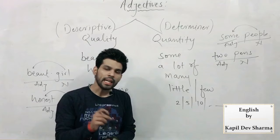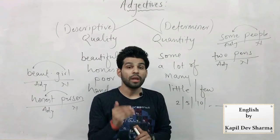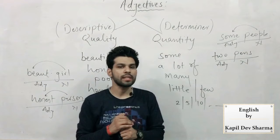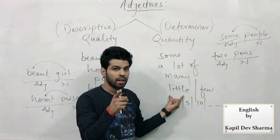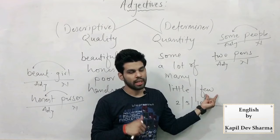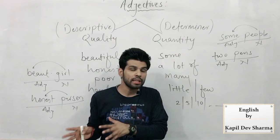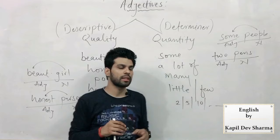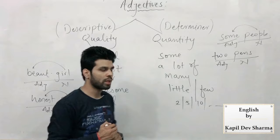एक नई चीज़ यहाँ से add करना चाहूँ — general तौर पर जो मैं आगे बोलने वाला हूँ, वो books नहीं पढ़ाती। हमें रटा दिया जाता है कि little का इस्तेमाल uncountable nouns के साथ करते हैं, few का इस्तेमाल countable nouns के साथ। Fine — few people: बिल्कुल सही। Little water, little money — money uncountable थी। पैसे और dollars गिनते हैं, money याने धन नहीं गिना जाता। तो little का इस्तेमाल uncountable के लिए, few का countable noun के लिए।